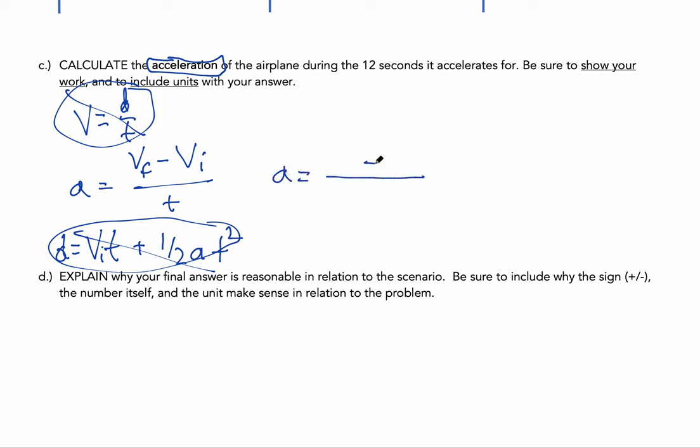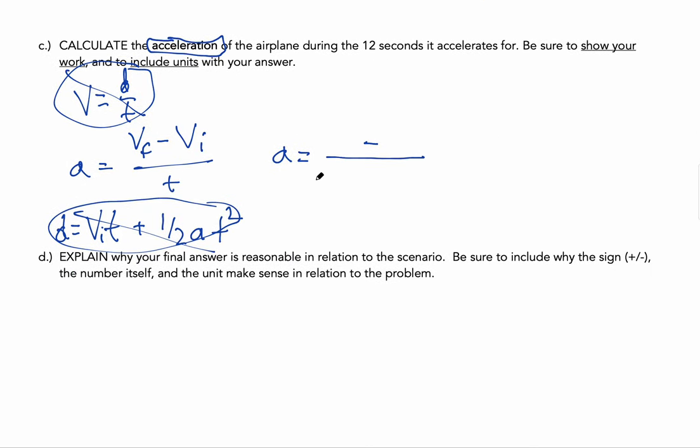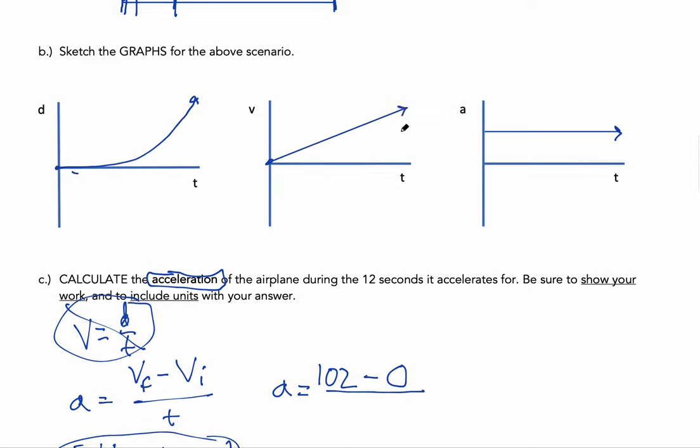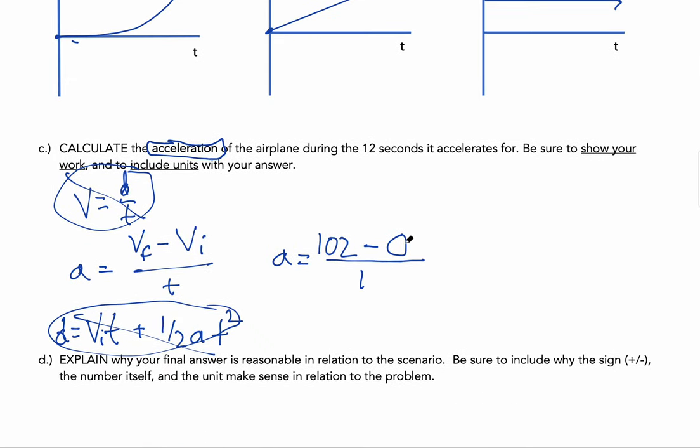I'm going to get ready for my VF, VI, and T to go ahead and drop in here. I know my final velocity, right? We said before that it was 102 meters per second. My initial velocity was zero. And my time was 12 seconds. And it does actually tell us, again, 12 seconds in the problem. So we can go from there. If we wanted to, we could show another sub-step, showing 102 minus zero is just 102 over 12. You don't have to do that necessarily. I would know what you mean by doing 102 divided by 12. And let's see, 102 divided by 12 gives me 8.5. Not done yet.